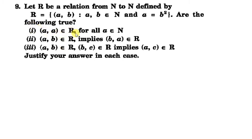The first statement is (a,a) belongs to R. So we check: for (a,a) to be related, a must equal a². But for natural numbers except 1, a is not equal to a². It means (a,a) does not belong to R.